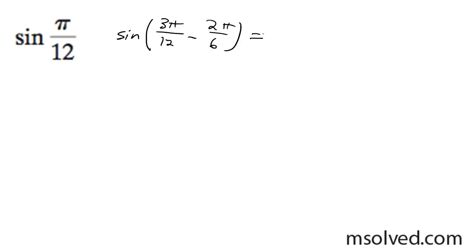And these are identities we recognize and can find exact values for. So 3π over 12 is the same thing as π over 4, and 2π over 12 is equal to π over 6.